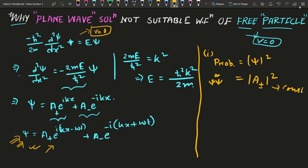Since the probability density |ψ|² equals |A₊|² is a constant, the probability of finding the particle at any position — whether x₁ or x₂ — does not depend on position at all. That means we can find the particle at any position in free space with equal probability, which is physically wrong and completely unacceptable.